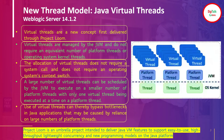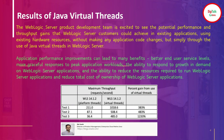Use of virtual threads can thereby bypass bottlenecks in Java applications that may be caused by reliance on a large number of platform threads. Whatever limitations we discussed — for example, a concurrency limit of 40 threads — created a bottleneck where only 40 concurrent requests could be executed. With the virtual thread model, where each physical thread has multiple virtual threads, these bottlenecks will be eliminated from Java applications.